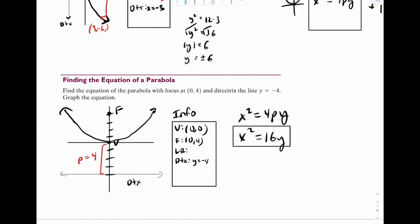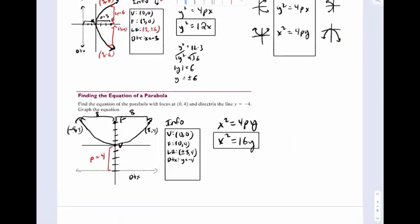Now the LR, if p is 4, that means go 2p out in each direction. So that's 8 and 8. So this must be (8,4) and (-8,4). So for LR points, let's put plus or minus 8 comma 4. And that's it. We found the equation. We have the graph. We are done.